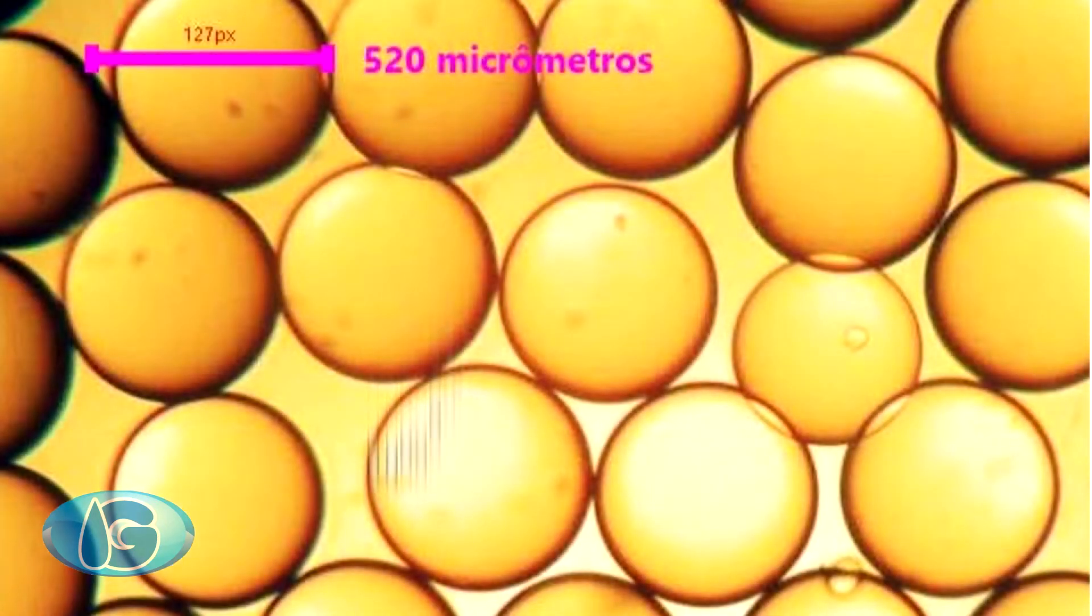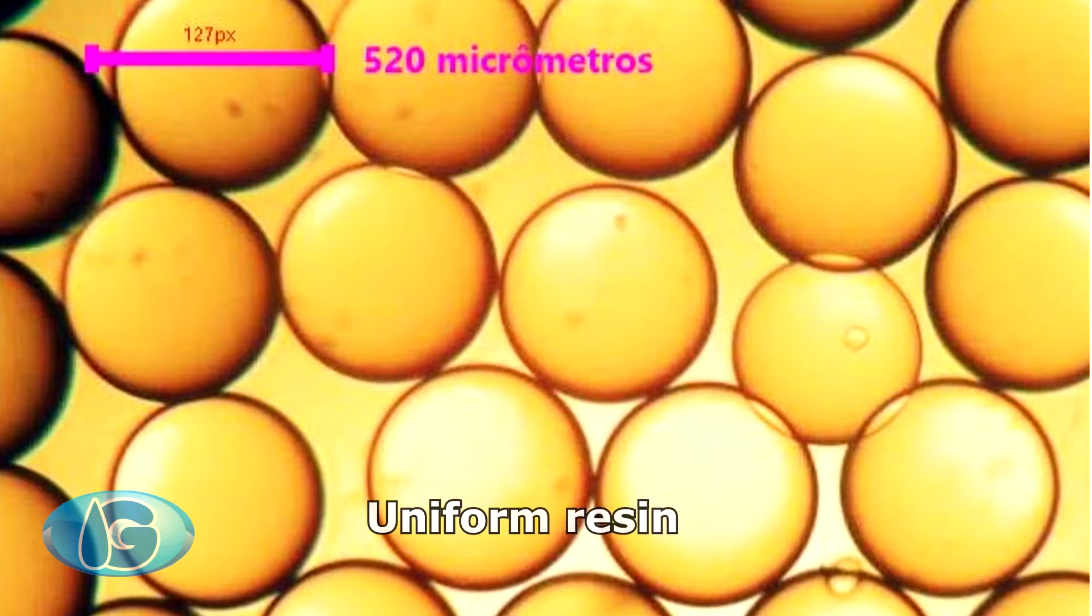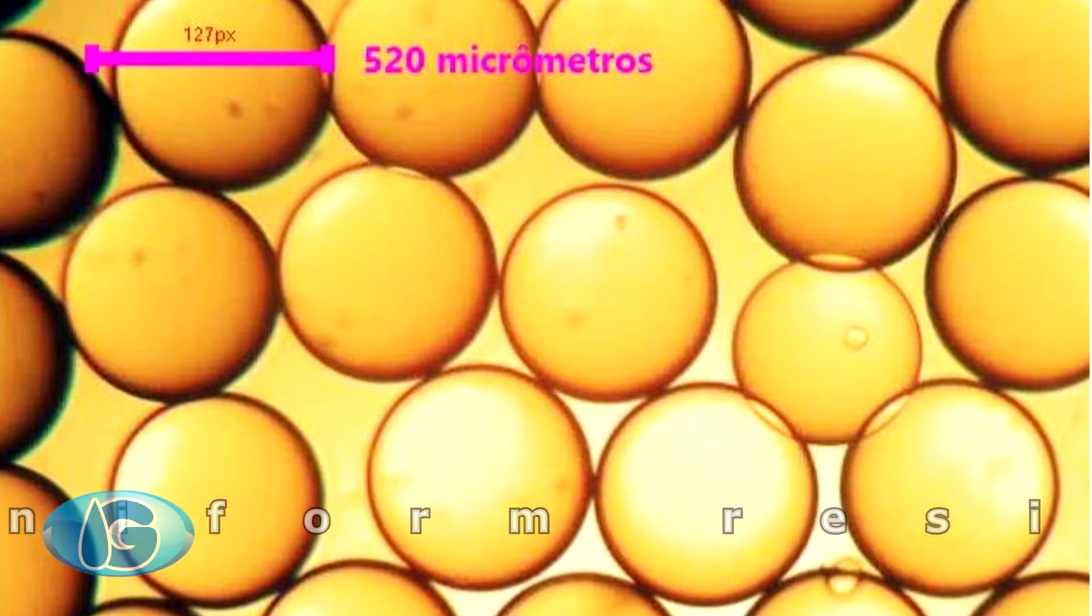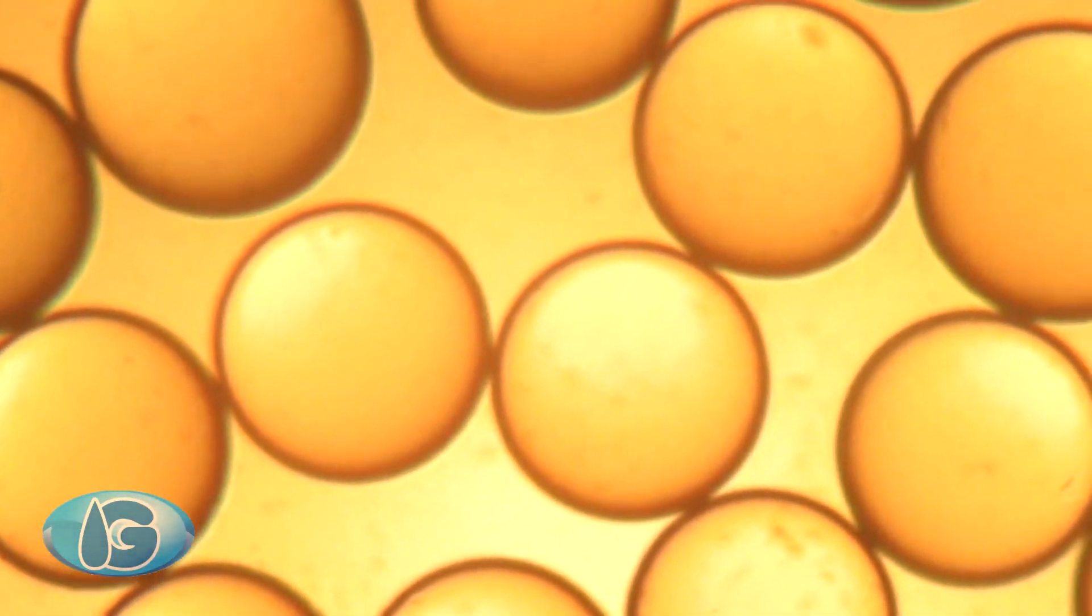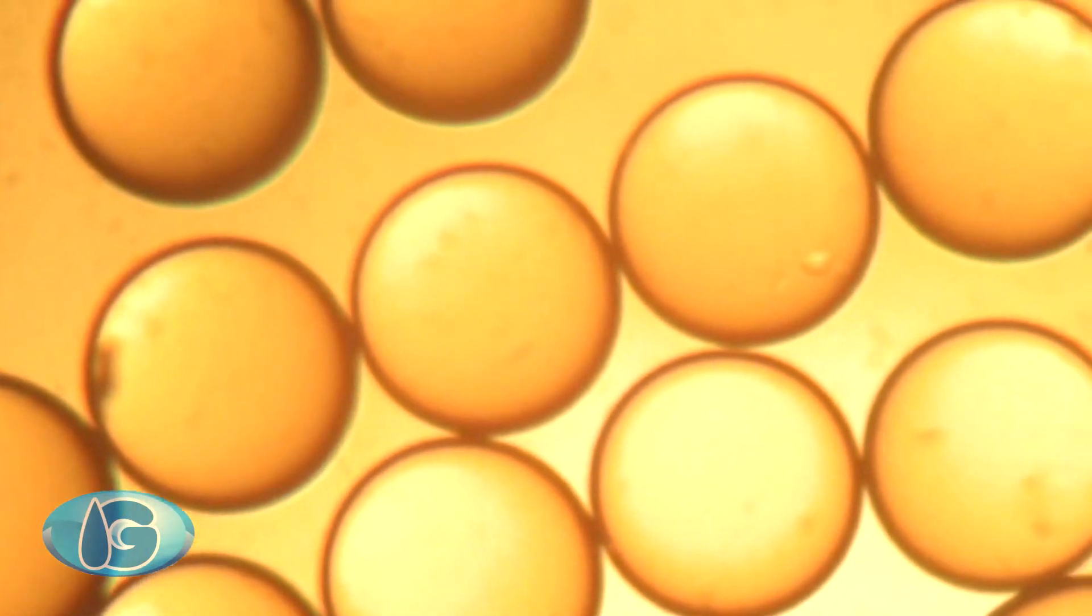Here we have a uniform resin. You can see a regular format of these spheres. We measure diameter and we found 520 micrometers. You can notice a very small variance of diameters. This is a better quality resin and obviously a higher price one. So it gives better results, reducing losses of resins through drains and crepings.